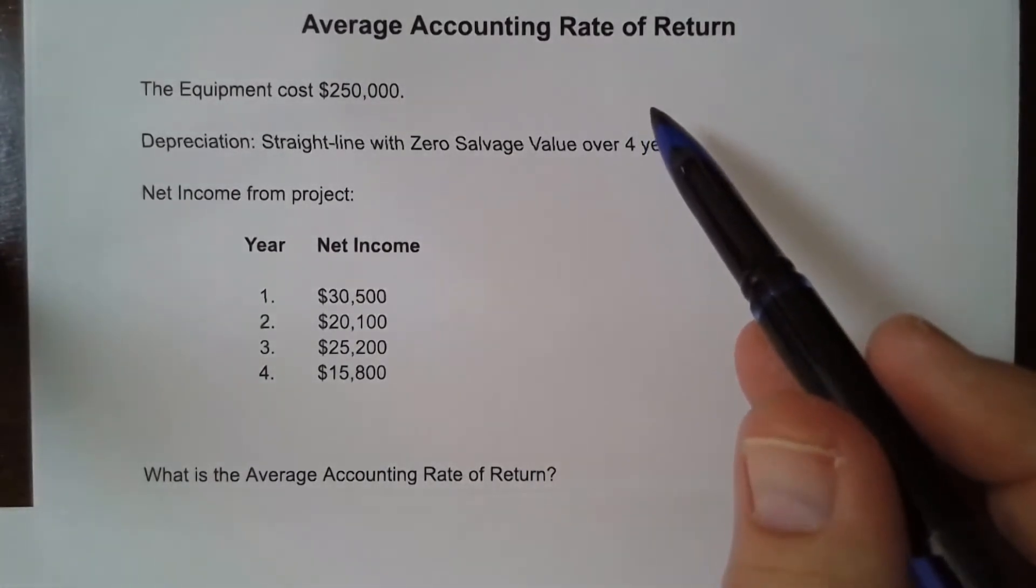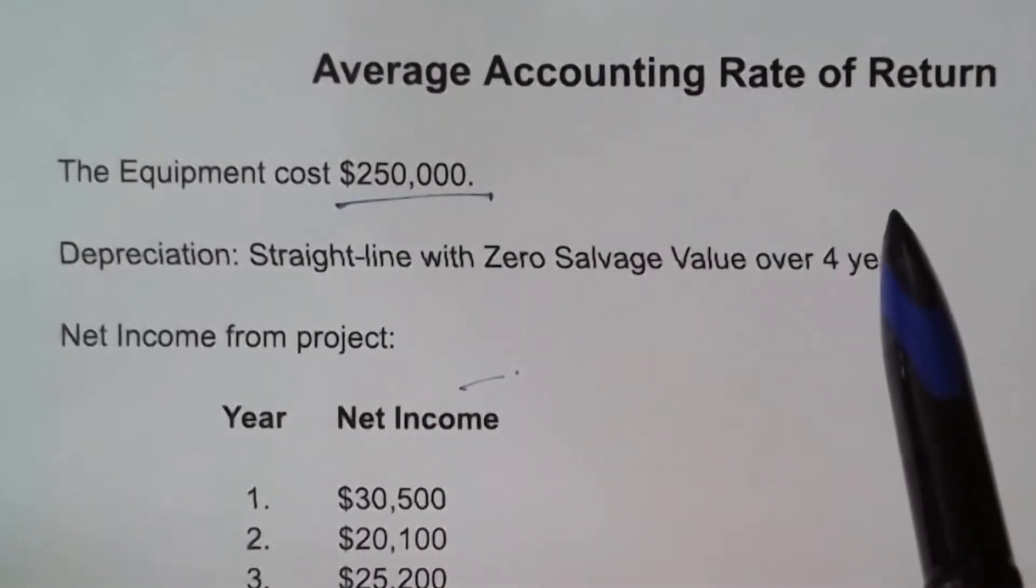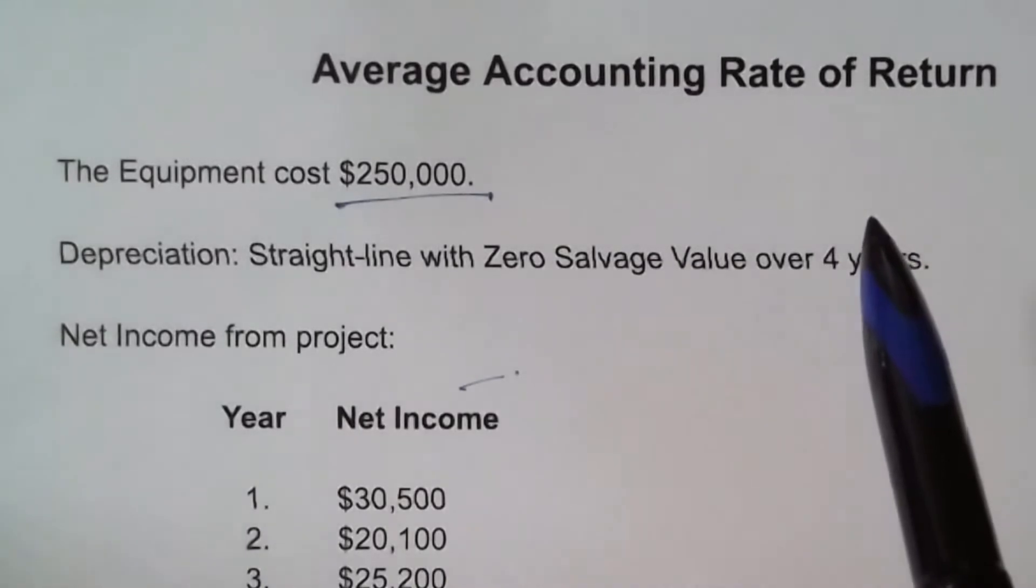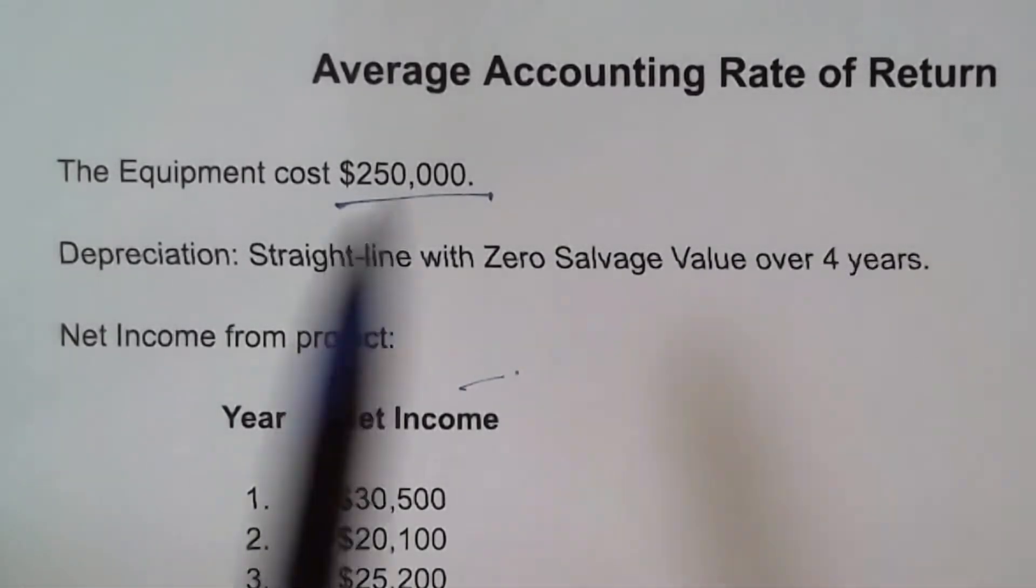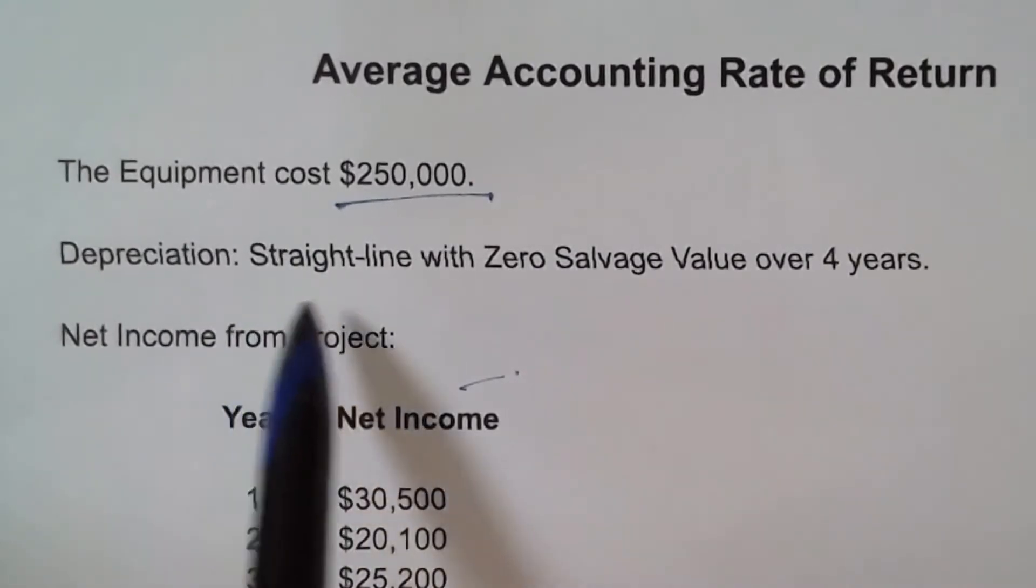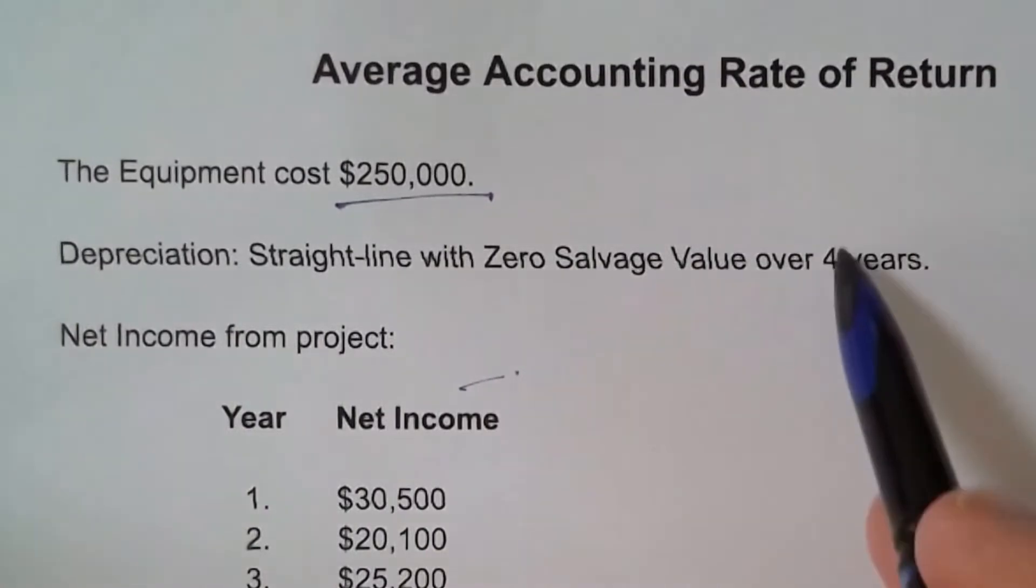Let's say you have a project that costs $250,000. So that is the amount of money that has to be expended on the equipment, for example. And that equipment is going to be depreciated in this example in a straight line method with zero salvage value over four years.